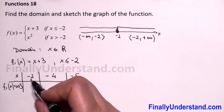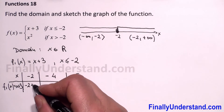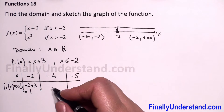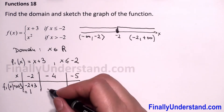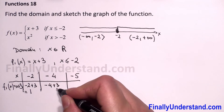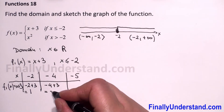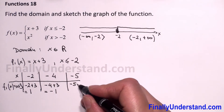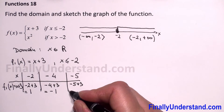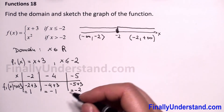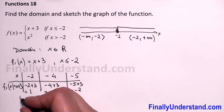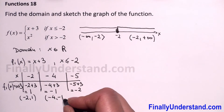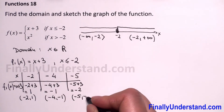For x equals negative 2: negative 2 plus 3 equals 1. For x equals negative 4: negative 4 plus 3 equals negative 1. For x equals negative 5: negative 5 plus 3 equals negative 2. So we have three points: (negative 2, 1), (negative 4, negative 1), and (negative 5, negative 2).